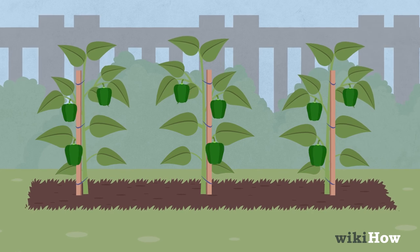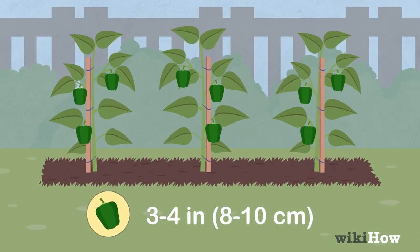Harvest peppers from the plants when the peppers are dark green and 3-4 inches, 8-10 centimeters, long.